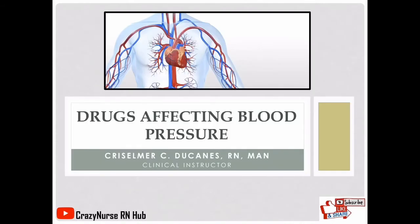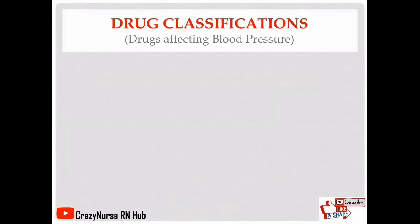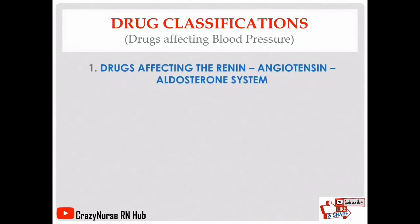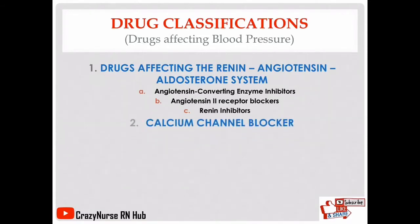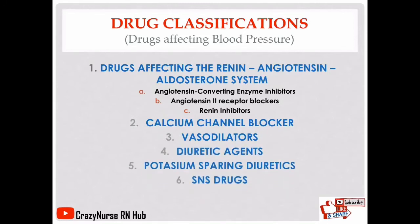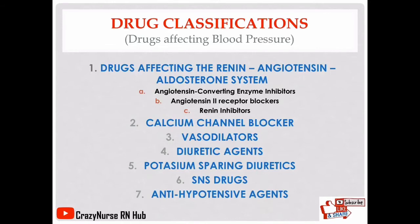Now let's discuss the drugs affecting the blood pressure. Drug classifications include: drugs affecting the renin-angiotensin-aldosterone system — angiotensin-converting enzyme inhibitors, angiotensin-2 receptor blockers, and renin inhibitors — as well as calcium channel blockers, vasodilators, diuretic agents, potassium-sparing diuretics, sympathetic nervous system drugs, and anti-hypotensive agents such as vasopressors.